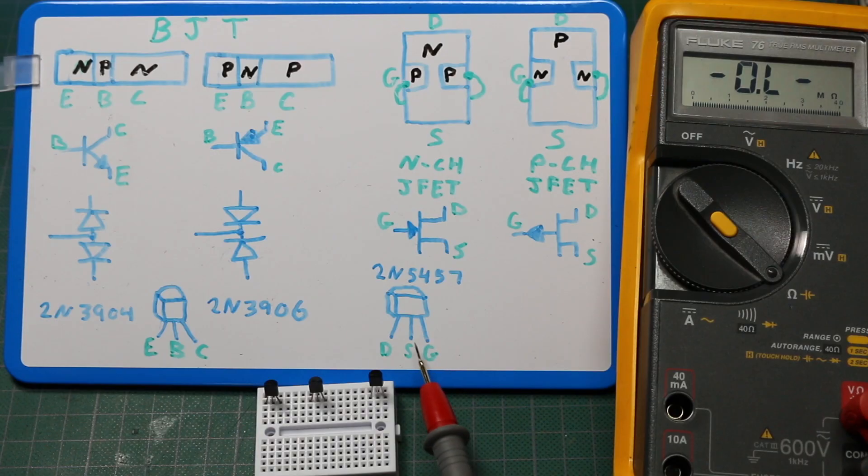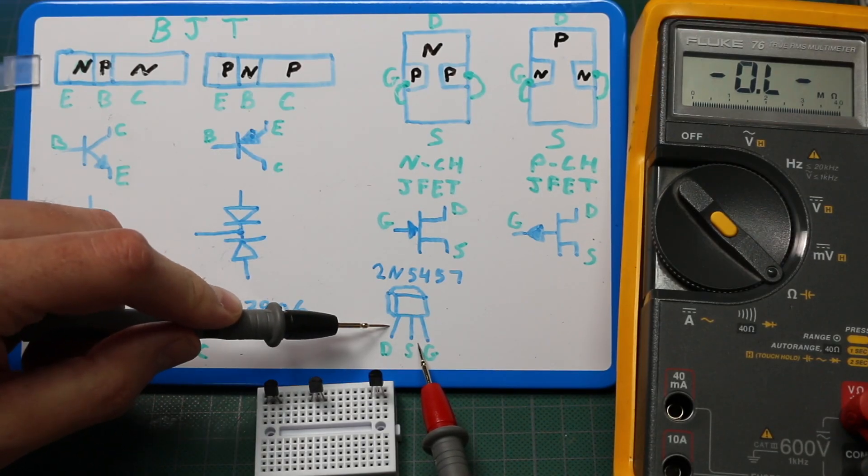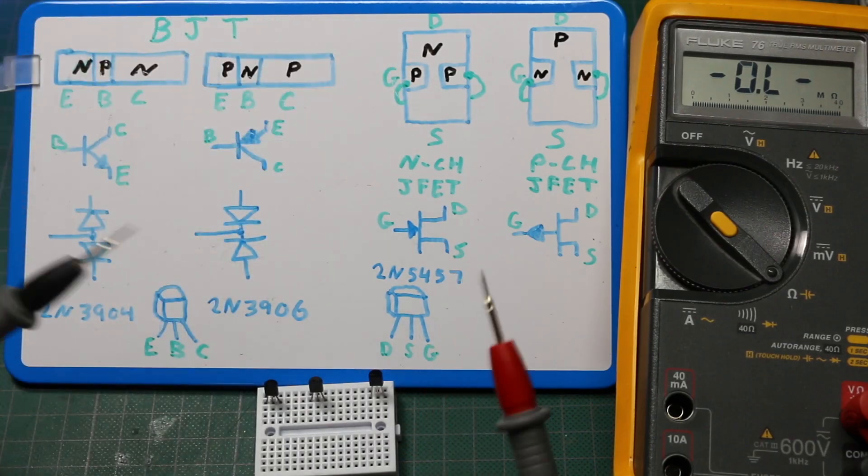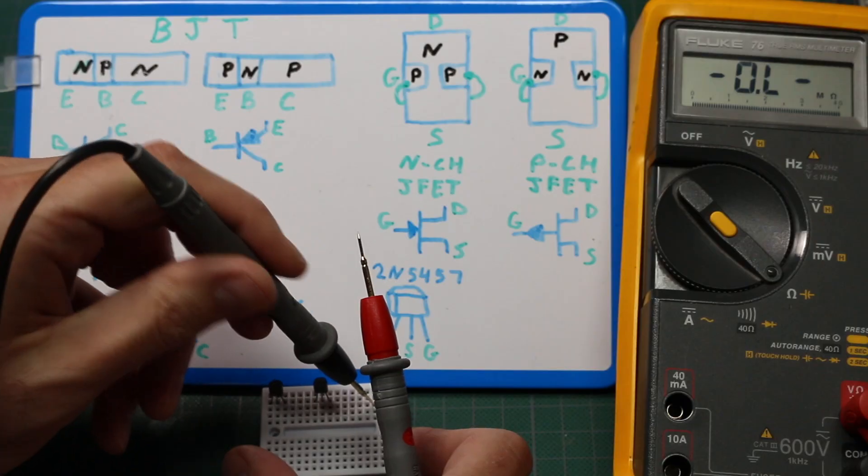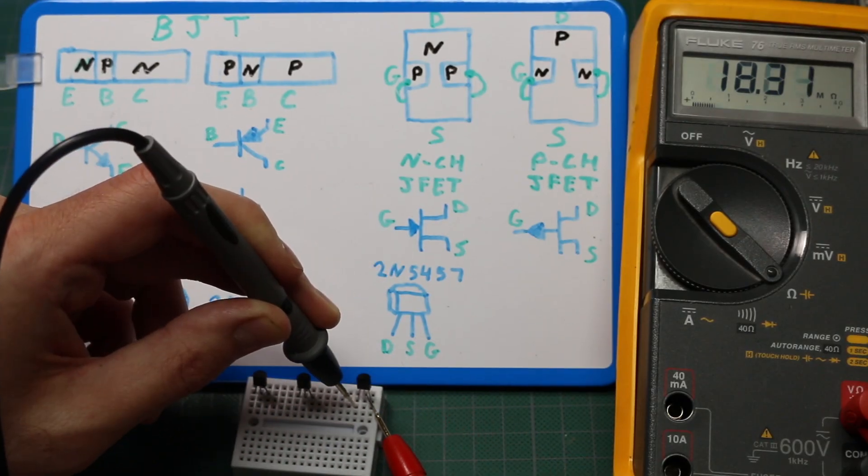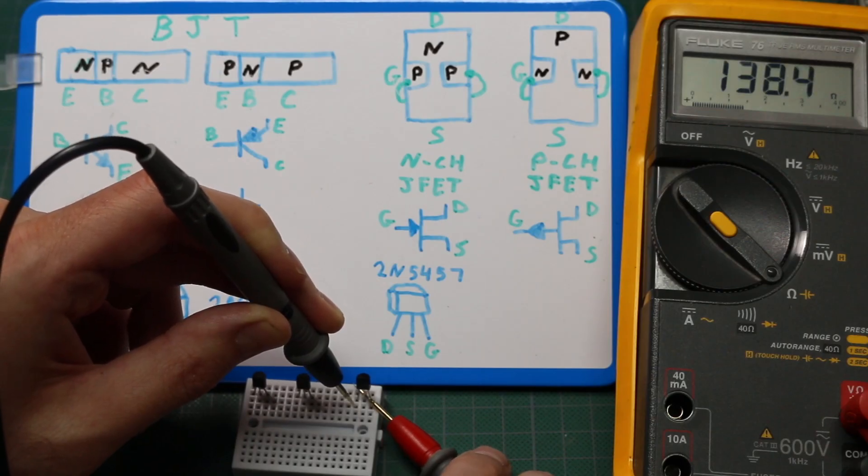So I can use one meter probe to short source and gate, and use the other probe to measure drain, and I should have an open channel with a couple hundred ohms max resistance if everything's working well. So I'll put one probe on the drain, then the other probe simultaneously bridging source and gate, and I have 138 ohms.